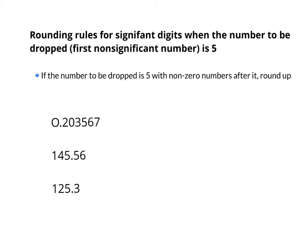There are some different rounding rules if the number to be dropped is 5. Rounding rules for significant digits when the number to be dropped — the first non-significant number — is 5.